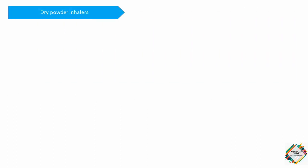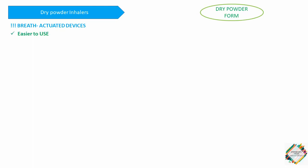Next, we are going to talk about dry powder inhalers. These deliver medication in a dry powder form and are usually breath-actuated devices that depend on your inhalation to release the medication. Compared to PMDIs, they are easier to use as they do not need propellants or coordination. DPIs are usually single-dose devices, although multi-dose dry powder inhalers are available as well.